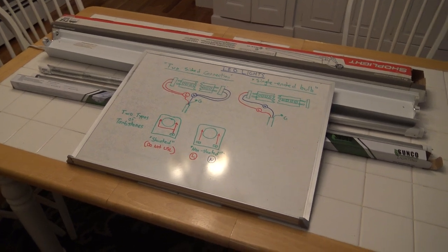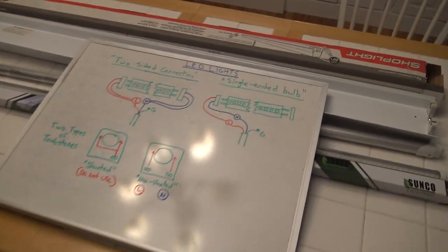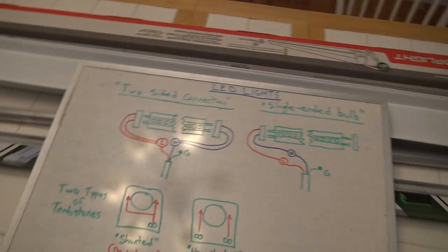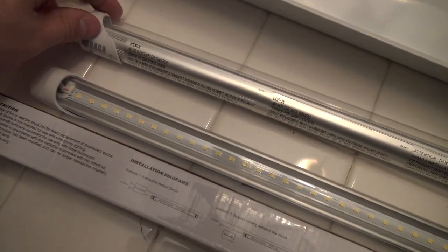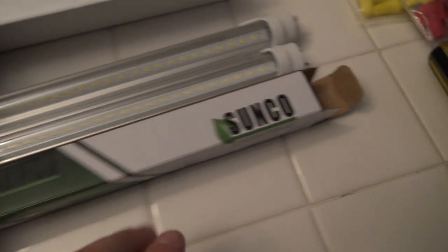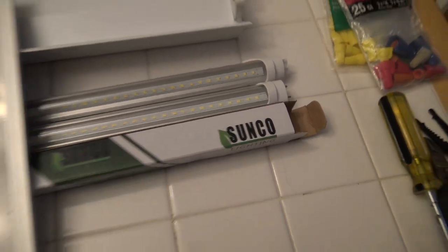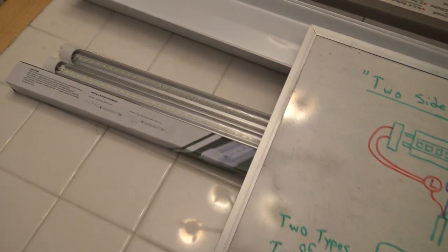All right, and here we are at the workbench, aka the kitchen table. And we've got a couple of LED lights here. You can see them here. They are from a brand called Sunco. I'll leave the link to those in the description down below if you'd like to check them out.